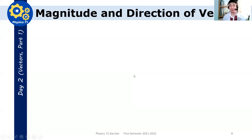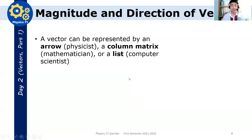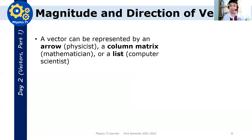So vectors have two parts. A vector can be represented as an arrow, a column matrix, or a list. There are different ways of representing a vector. For us studying physics, we are only representing a vector as an arrow.